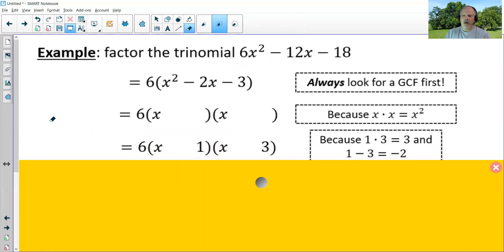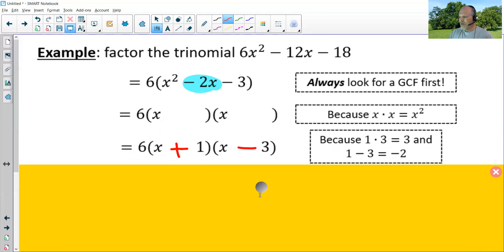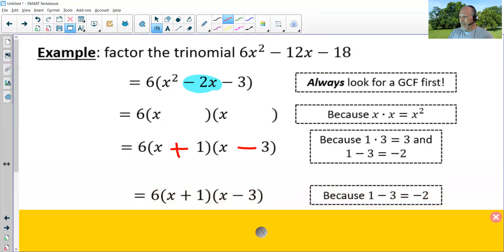I now just have to figure out which signs to put. Since I need the middle term to equal negative two, that means that I should have a positive one and a minus three, because positive one minus three is negative two. And that is the answer for this problem.